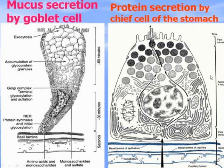This is an example of protein secretion by the chief cells of the stomach. These cells produce proteins for export. In the endoplasmic reticulum, proteins are synthesized from amino acids that diffuse from the blood. These proteins are then processed and packaged in the Golgi complex, accumulated in the apical portion of the cells, and released outside into the lumen of the stomach when necessary — for example when you eat food — where the enzymes are released and digest the food.